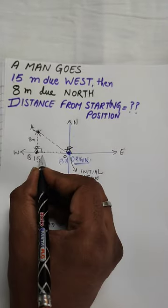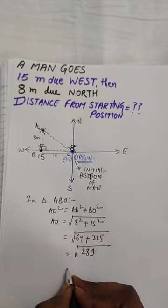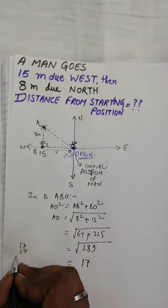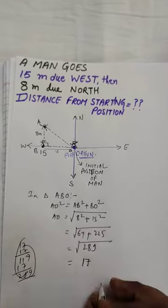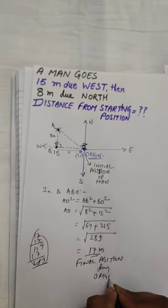So AO can be calculated as square root of 8 squared plus 15 squared, which is equal to square root of 289, equal to 17 meters. So the man is 17 meters from the origin, that is, the initial position.